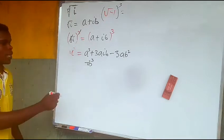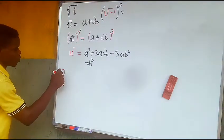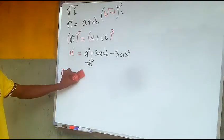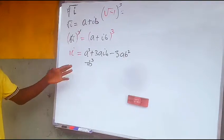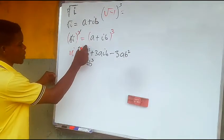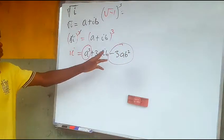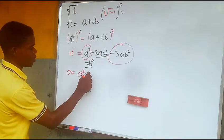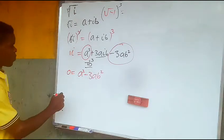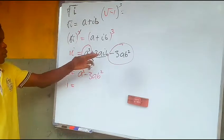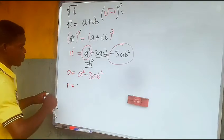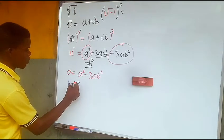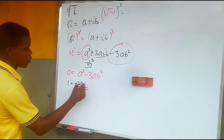From here, i is equal to this expansion. Since i as a complex number has a real part of zero, we write it as zero plus i. Now let's equate the real parts together and the imaginary parts together. The real part zero equals a cubed minus 3a·b squared, and the imaginary part: one, the coefficient of i, equals three a squared b.